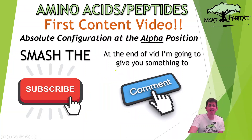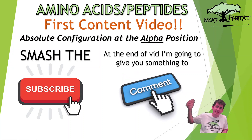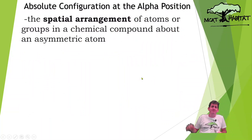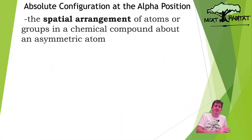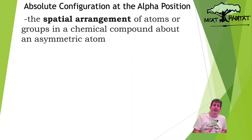So here we go. Comment down below on audio — I need to know how this sounds, how long these videos should be. Help me out to make better videos. The spatial arrangement of atoms or groups in a chemical compound is what we are talking about when we talk about absolute configuration.